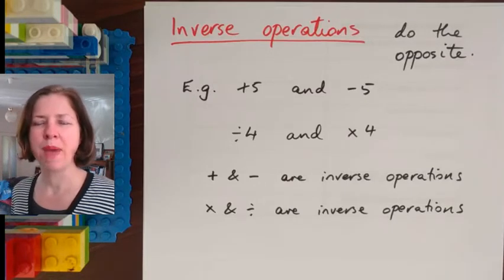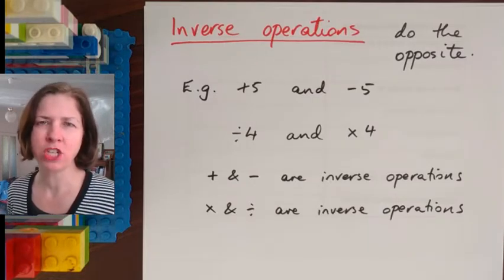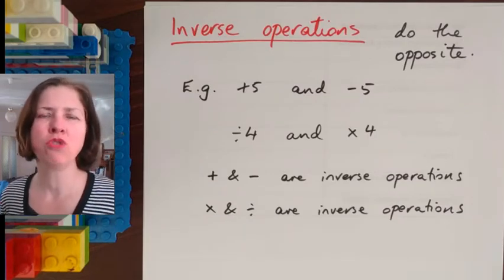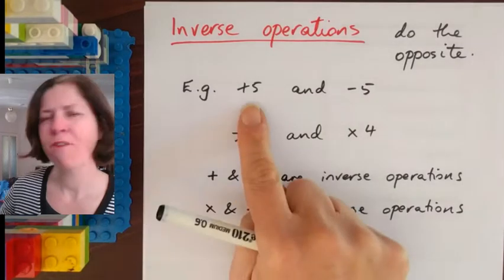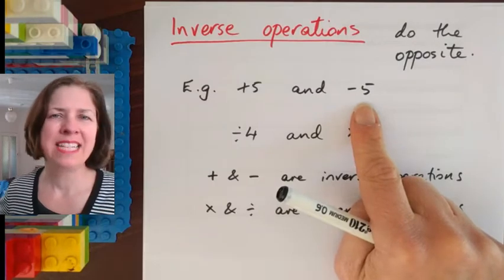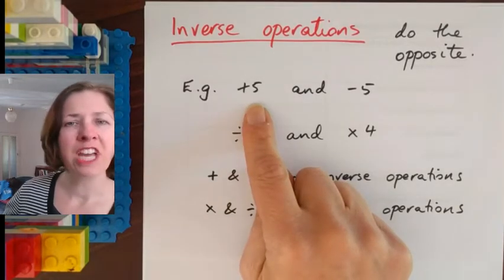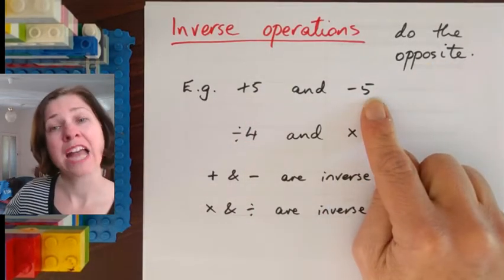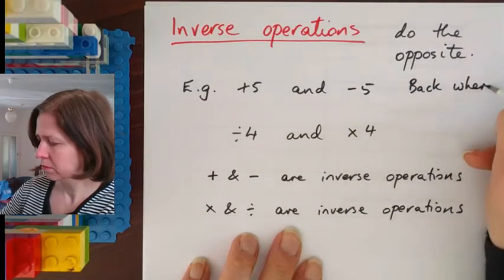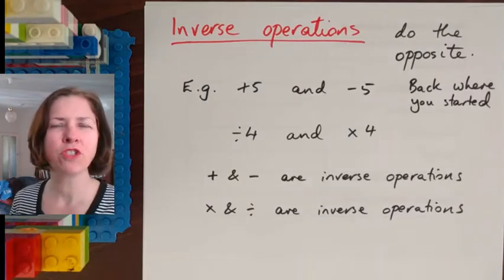Now before we get to backtracking I just want to remind you about a thing called inverse operations. I don't know if you've met this word before but I'm sure you'll understand the idea. Inverse operations do the opposite. So for example if I add 5 then the inverse operation is going to be subtract 5 and the test if it's inverse is you start with a number like let's start with 10 and then you add 5 you get 15 and then you subtract 5 and you're back where you started.